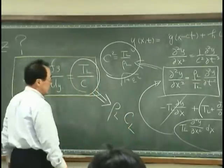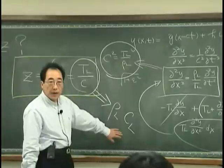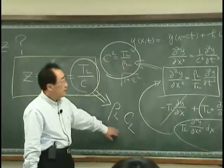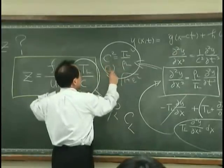L. If I say C_L is the speed of propagation of a string, T_L is C squared rho L. This is same as C_L squared.